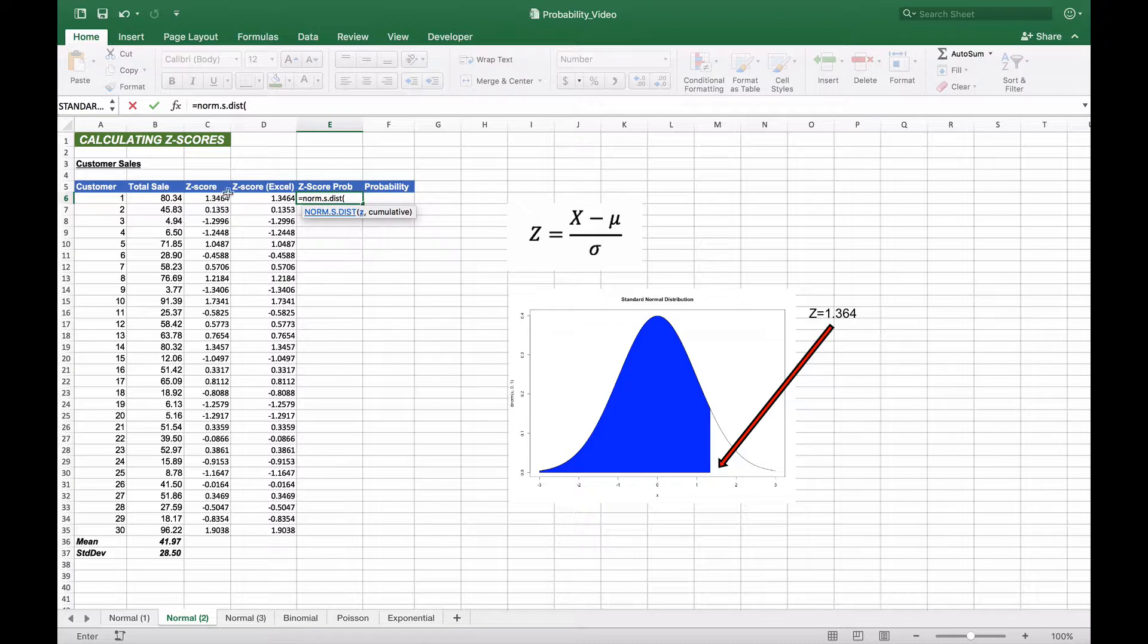So our z-score can be either one of these. I'll choose this one because we use the standardized function, and we're going to say true because we want it to be the cumulative probability under the curve. Again from our notes, we remember that true is the cumulative probability giving us the entire probability from that point all the way to the left. If we had chosen false, it would just be that particular point.